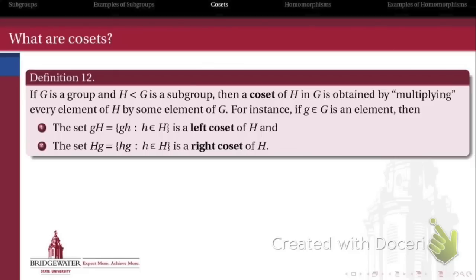But because our groups need not be abelian, we might get a different result if we multiply on the left versus if we multiply on the right. So the left cosets will be the result of multiplying every element from our subgroup H by an element G on the left. And the right cosets will consist of the subgroup H multiplied by element G on the right.